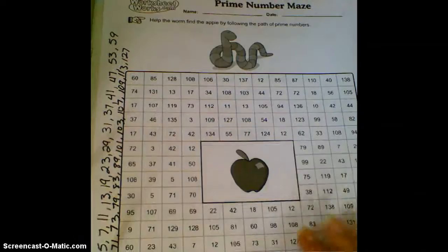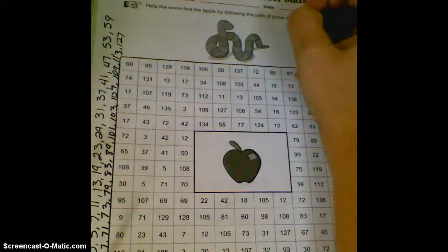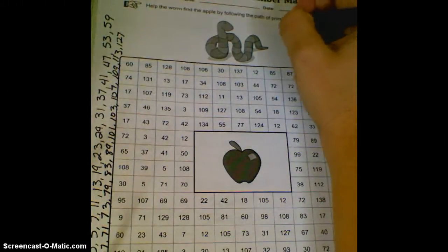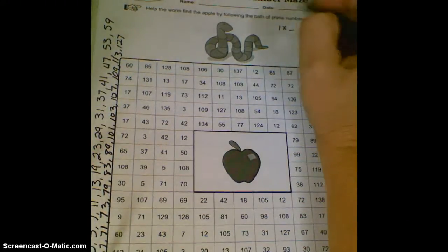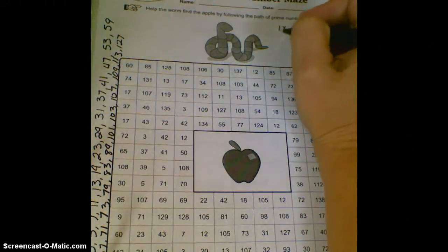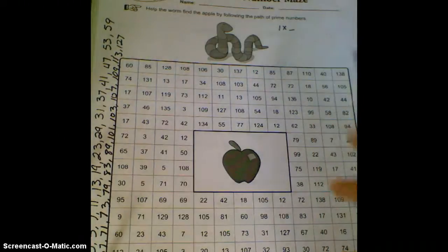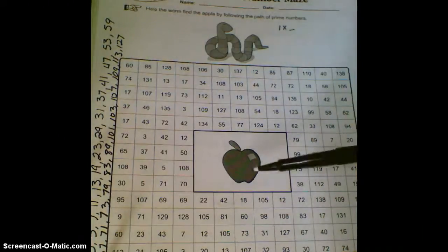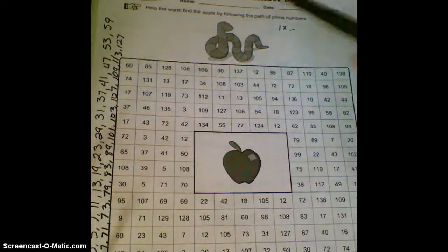If you recall from the lesson we've been doing the last couple days, prime numbers only have the factors 1 and itself. Those are the only two factors. 1 is not prime because it doesn't have two factors. It only has the factor 1. So, we have to get the worm all the way to the apple here.